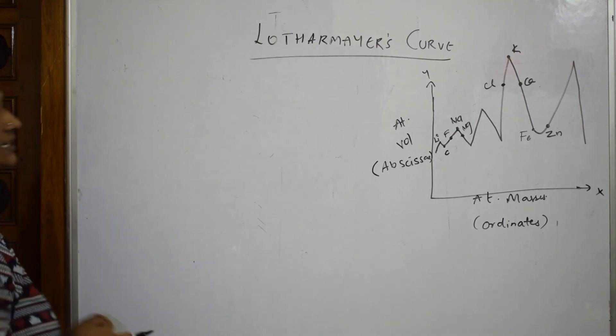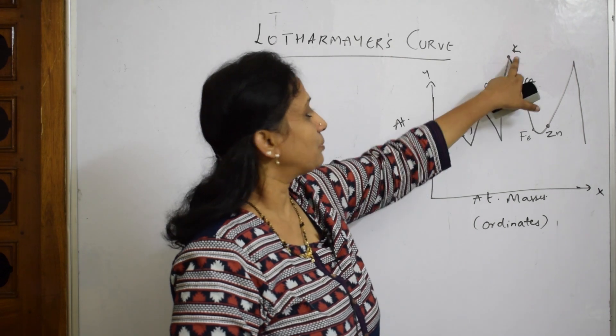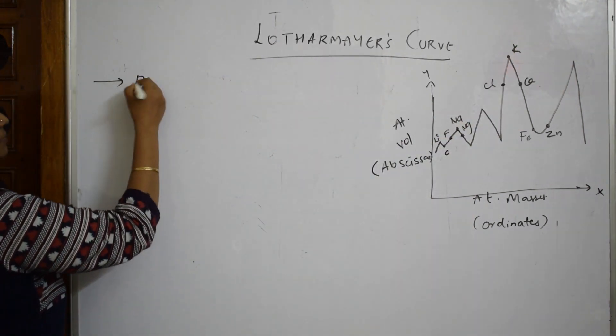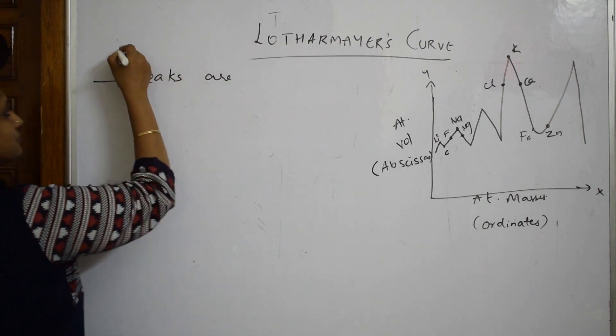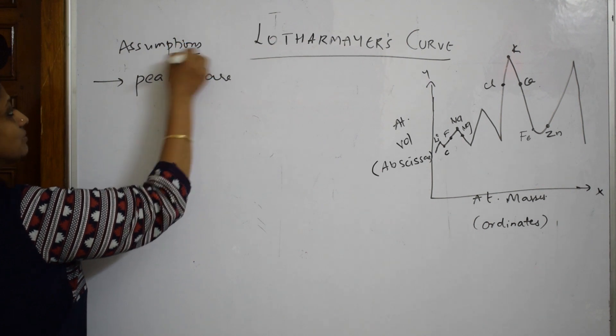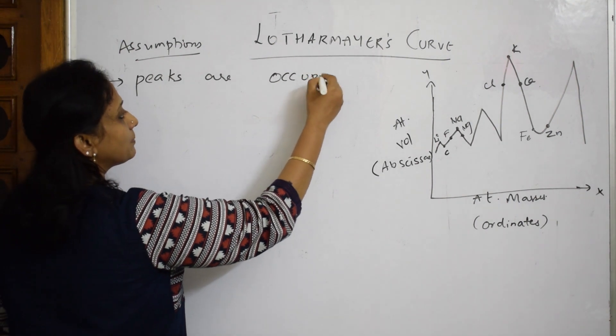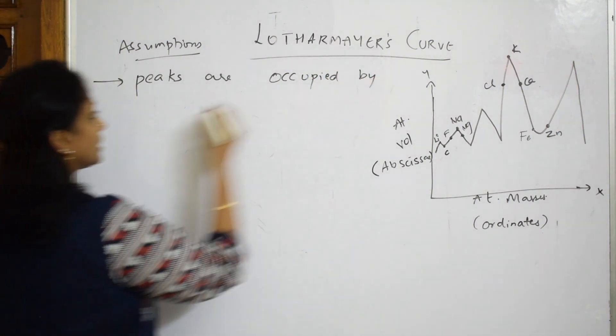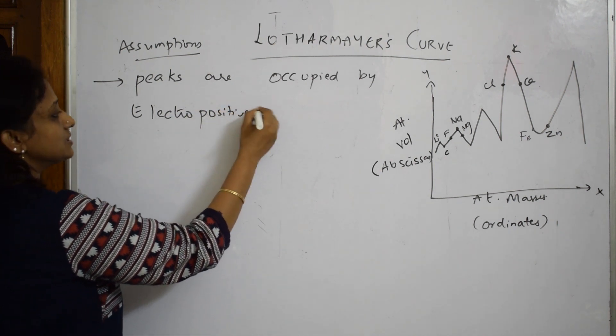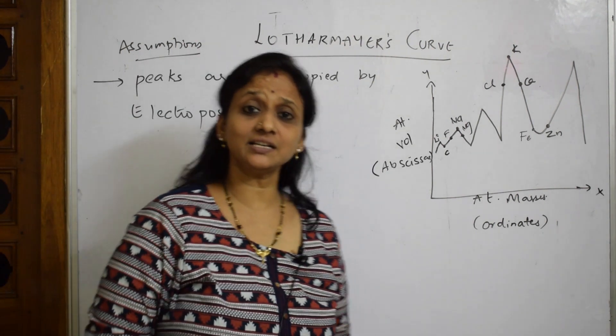The first important thing, he said, all the peaks whatever are there, let it be lithium, let it be sodium, let it be potassium. He said, all the peaks are occupied by electropositive elements. Peaks are, these are the first assumptions which he has given us. Assumptions given by Lothar Meyer, who is a chemist, he said peaks are occupied by electropositive elements, which we are now naming according to mostly as alkali metals.